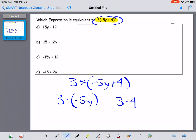So 3 times negative 5y is negative 15y, and 3 times 4 is 12. So our expression, when simplified, looks like this: negative 15y plus 12.